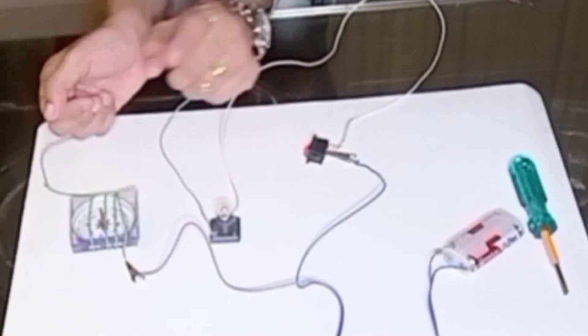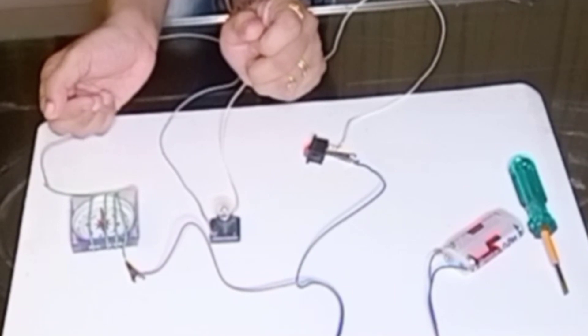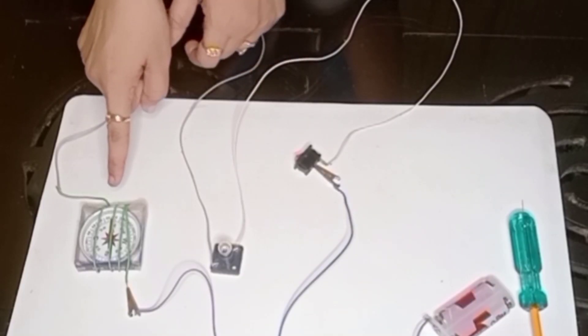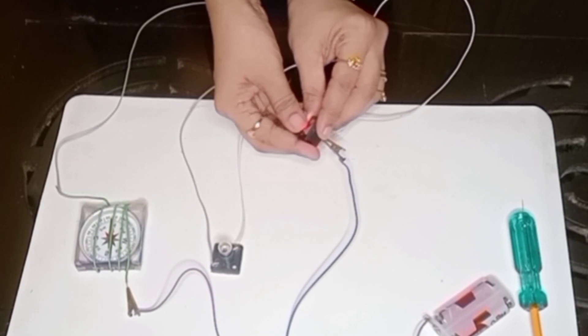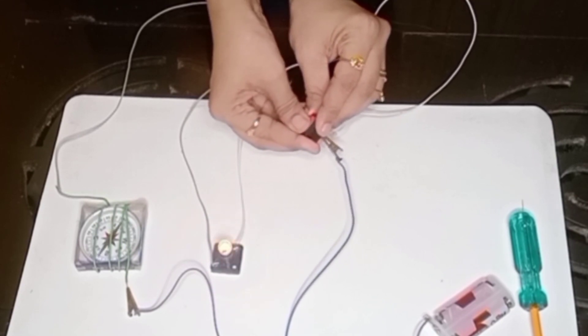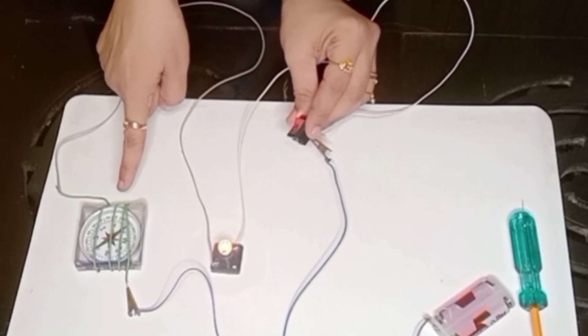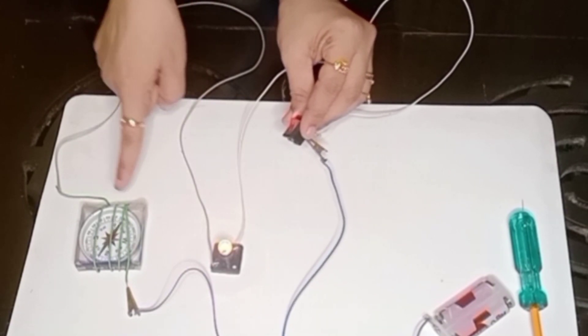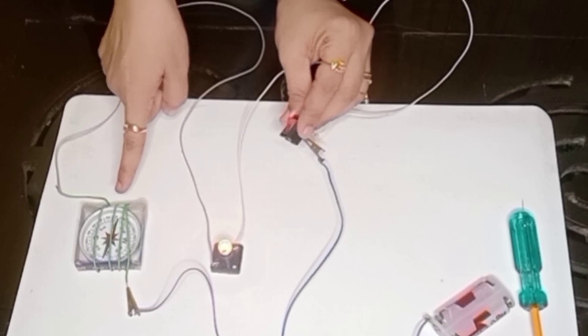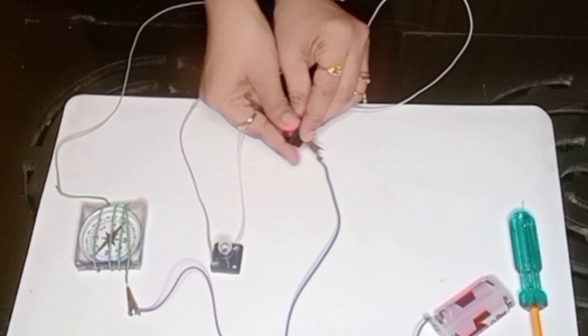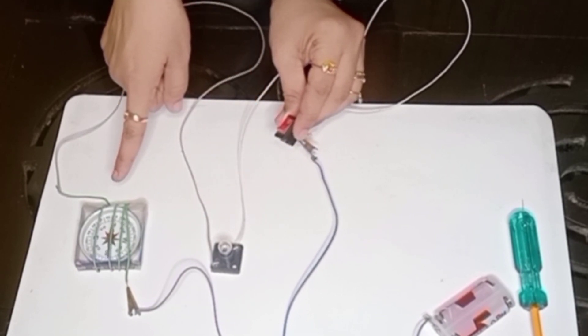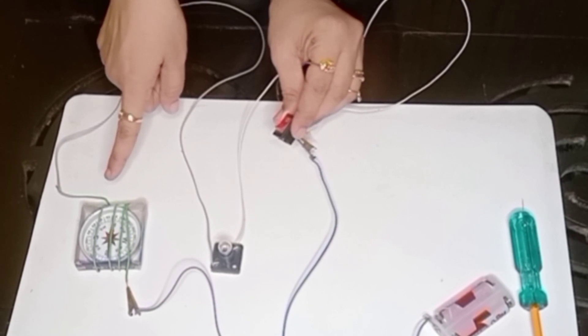Now you can observe the compass is showing the earth's magnetic field. As soon as we switch on the circuit, here I go, I just switched on the circuit. Just observe the magnetic compass. It gets deflected from its original position. Again if I switch it off, just observe, the compass will come back to its original position. That is the earth's magnetic field.